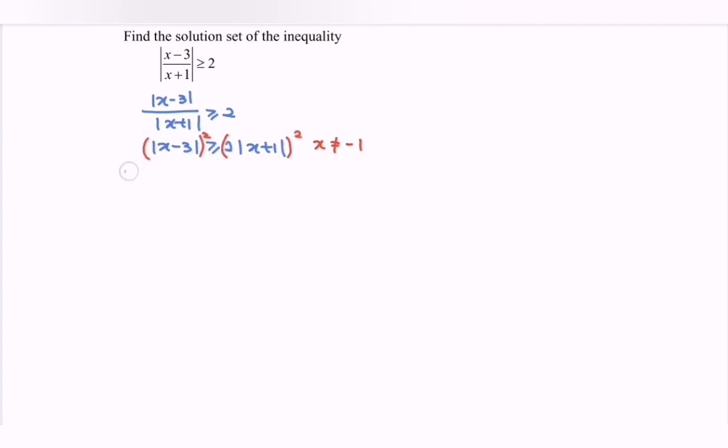So if we square both sides, we have x minus 3 squared greater or equal to 4 times x plus 1 squared. So we have x squared minus 6x plus 9 greater equal to 4 times x squared plus 2x plus 1.